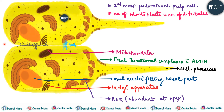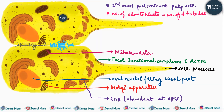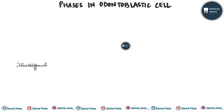The two odontoblast cells are attached to each other with the help of gap, desmosomal, or tight junctions. These gap, desmosomal, and tight junctions are the terminal bar apparatus of the odontoblast cells.